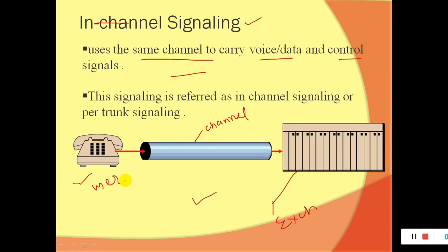If a user wants to communicate to another subscriber, first of all that user needs to inform the exchange, because all information is kept at the exchange. The user does this by dialing the number to the called subscriber. The number you dial can be considered as the data — where it wants to connect, whether in India, abroad, or locally. All other information are the controlling information or control signals.